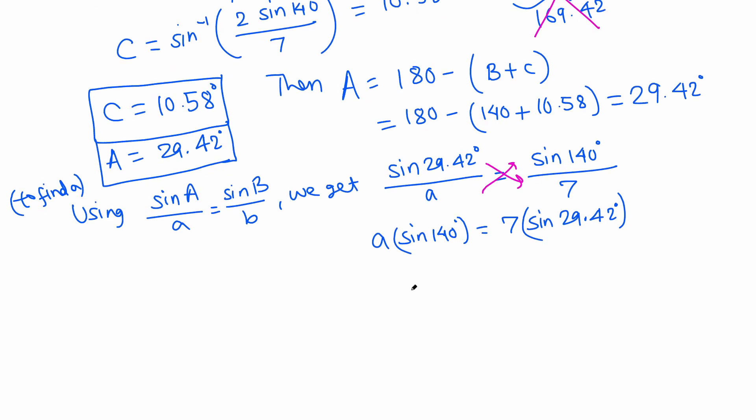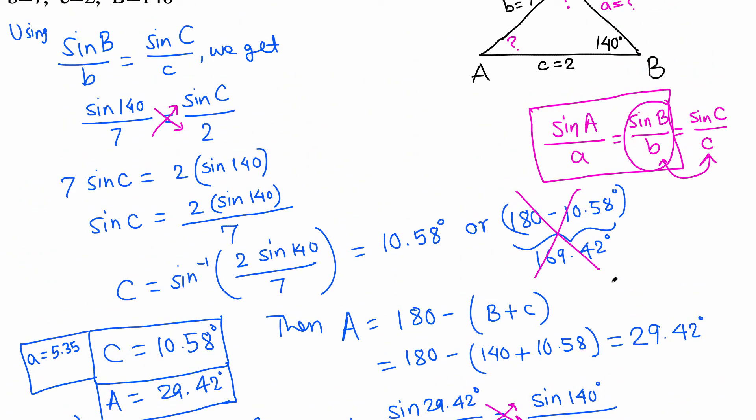As usual, when we have one fraction on each side, we cross multiply. So a times sine 140 equals 7 times sine 29.42. To isolate a, divide by sine 140: 7 sine 29.42 degrees all over sine 140. Use your calculator—just enter everything one time. If you want to do separate, then write at least six decimal places. That comes out to be 5.35. Now I'm going to write down here in this list of answers: a is 5.35.